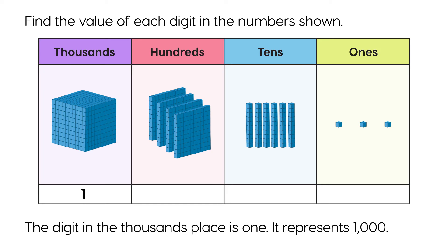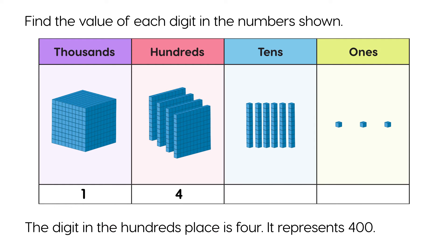The digit in the thousands place is 1. It represents 1000. The digit in the hundreds place is 4. It represents 400.